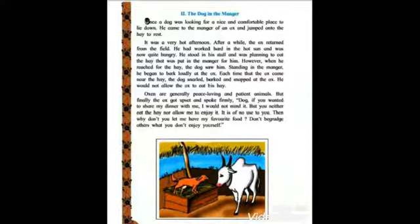Oxen are generally peace-loving and patient animals. But finally the ox got upset and spoke firmly. Dog, if you wanted to share my dinner with me, I would not mind it. But you neither eat the hay nor allow me to enjoy it. It is of no use to you. Then why don't you let me have my favorite food? Don't begrudge others what you don't enjoy yourself.